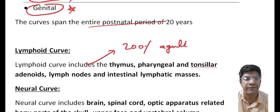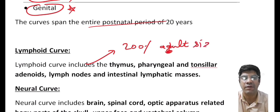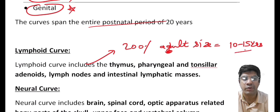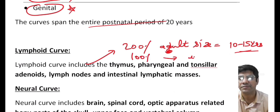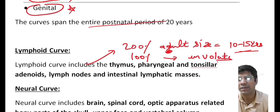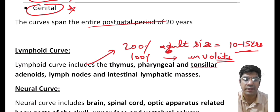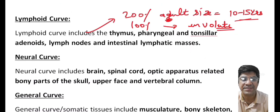Lymphoid tissue reaches 200 percent of their adult size between the ages of 10 to 15 years, then reduces from 200 to 100 percent of adult size in adulthood through a process known as physiological involution. The neural curve includes tissues like the brain, spinal cord, bony part of the skull, upper face, and vertebrae. By the age of eight years, these neural tissues are at 90 percent of their adult size.